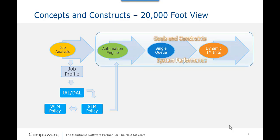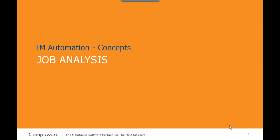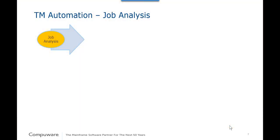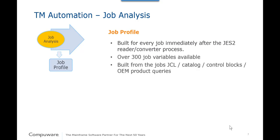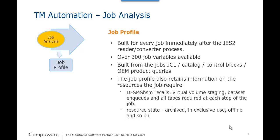Our first concept is job analysis. Job analysis was the first Throughput Manager concept introduced many years ago. Analysis follows immediately after reader conversion, where Throughput Manager drives the collection of job-related information using two external constructs. The first construct is the job profile. Each job is analyzed and a job profile is built. The profile will consist of over 300 job variables gathered from several sources, which include expanded JCL, catalog, control blocks, and OEM product queries. The profile also includes knowledge of what resources the job requires.